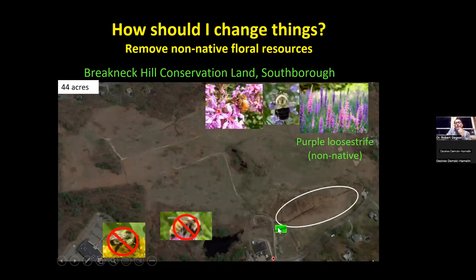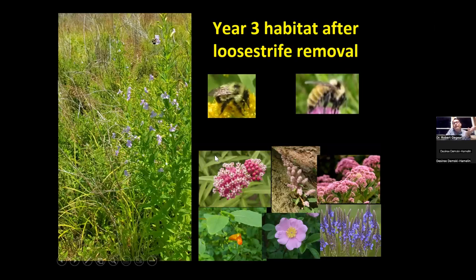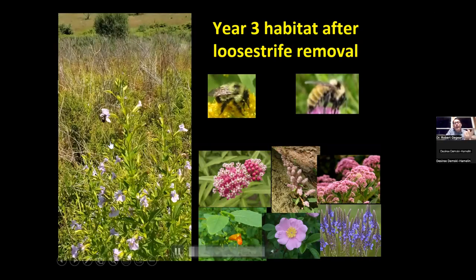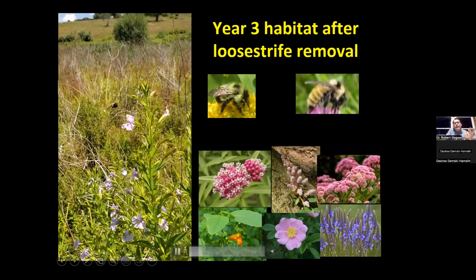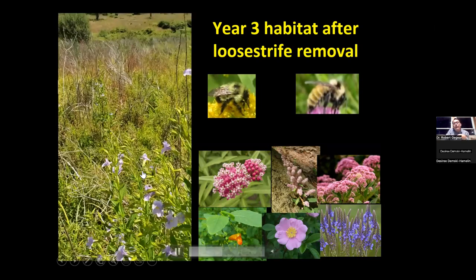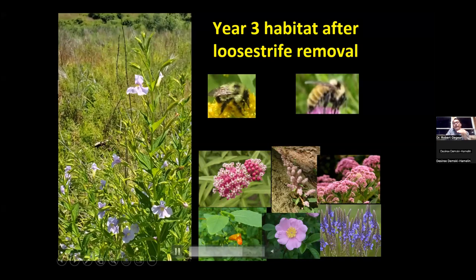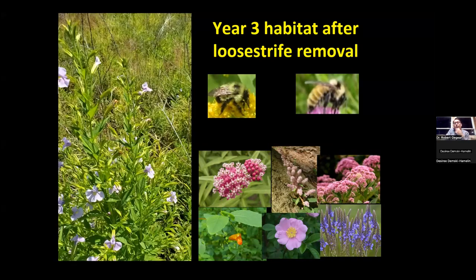At Breakneck, this whole wetland area was filled with purple loosestrife, which was planted by beekeepers to support honeybees. There were thousands and thousands of honeybees visiting purple loosestrife, plus lots of common bumblebee species, but none of the bumblebee species of conservation concern — they've got long tongues and purple loosestrife isn't tubular. So we removed the purple loosestrife. Three years later, all of the native plant diversity was unlocked — a native population of Mimulus and all these native plants replaced the loosestrife; they had been suppressed. In the video you can see Bombus vagans and Bombus pervicius on the same plant, which was unheard of at this site five years prior.